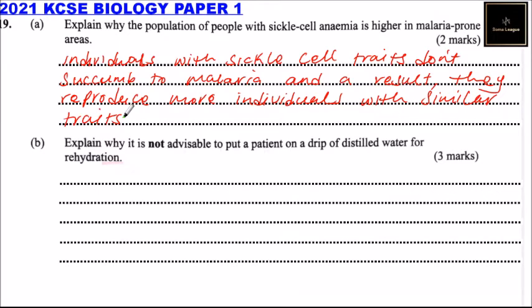Part B: explain why it is not advisable to put a patient on a drip of distilled water for rehydration. Distilled water is hypotonic compared to the patient's internal fluids.